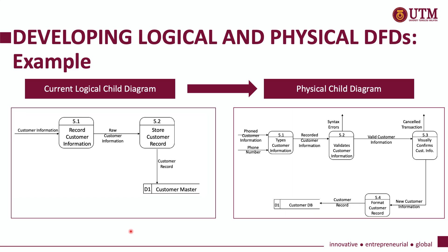This is an example of how we can develop from a logical DFD into a physical DFD. In the current logical child diagram, there are two processes involved — process 5.1 and 5.2 — and one data store, which is the customer master data store. The current logical child diagram shows a simple business process that is currently being done in the organization.